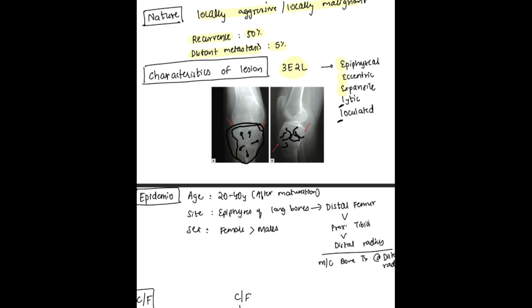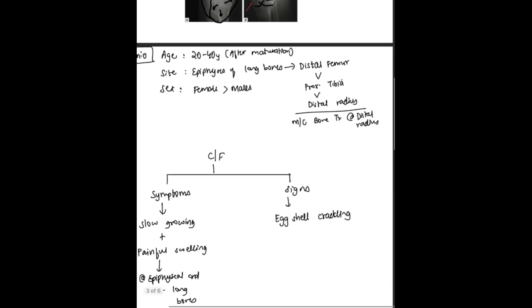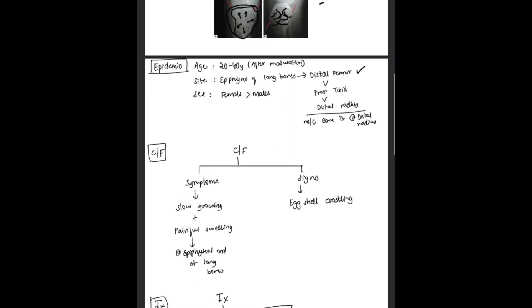Coming to epidemiology: age 20 to 40 years after maturation. Site is epiphyseal of the long bones. Most common site is distal femur, then comes proximal tibia, then distal radius. Most common bone tumor of distal radius is giant cell tumor. Sex: female shows slightly more predilection than males.